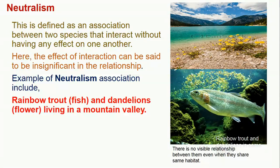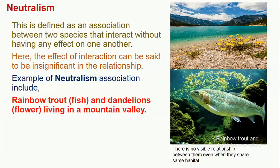The last type of association is neutralism. This is defined as an association between two species that interact without having any effect on one another — their presence together does not have any visible effect, and the effect of interaction can be said to be insignificant. An example is the rainbow trout and dandelions — the rainbow trout is a fish and the dandelion is a flower, and even if they are living in the same habitat there is no visible relationship between them, even when they share the same habitat.